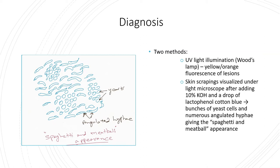Under the light microscope you will see a bunch of angulated — or bent — hyphae, and also yeast cells. During the disease process there is phase conversion from yeast cells to angulated hyphae, so you see a large number of angulated hyphae. When the patient has the lesion, there will be a mixture of yeast cells and angulated hyphae. That appearance gives the famous spaghetti and meatball appearance — the meatballs are the yeast cells and the spaghetti are the angulated hyphae.